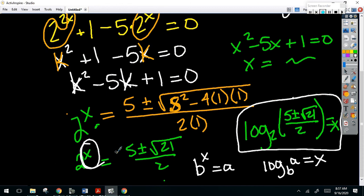So it is log base 2 of 5 plus or minus square root 21 over 2 equals x. This is what x equals. Because logs always equal exponents. Do you feel any better about it? Do y'all want me to work number 34 in a video for you or 35 in a video for you?